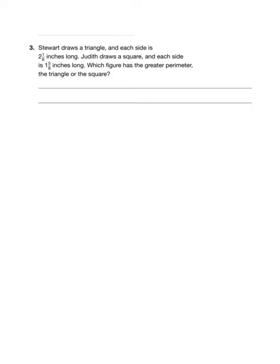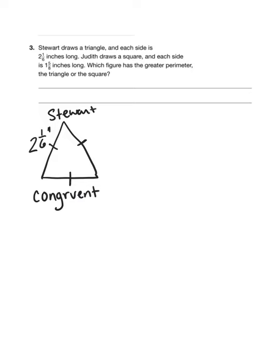Okay, let's look at number three. Stewart draws a triangle. It must be an equilateral triangle because each side of the triangle is two and one-sixth inches long. So if each side of the triangle is the same length, we can show that with these dashes here. That means that each side is congruent or the same.